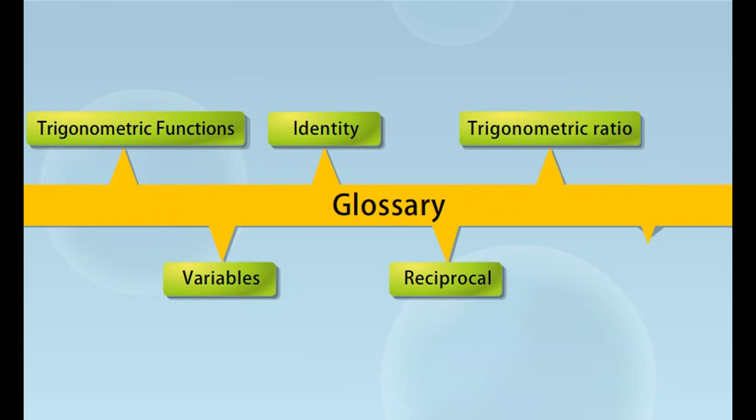Did you know? The trigonometric identities are derived by expressing the sine or cosine of a sum or difference of angles in terms of the sines and cosines of the individual angles. The identities are true whenever they are meaningful, which distinguishes them from equations that are true only for particular values of x.